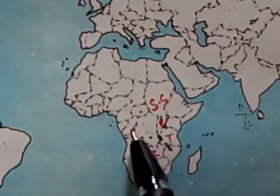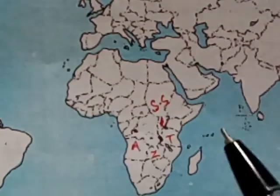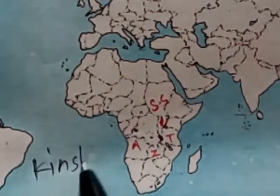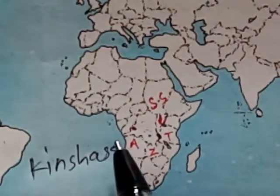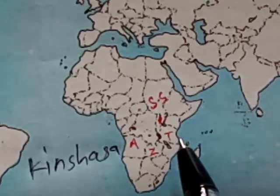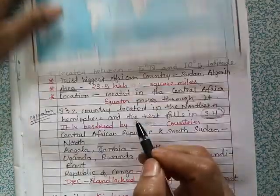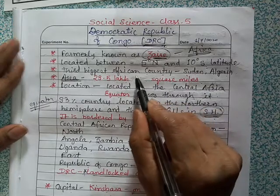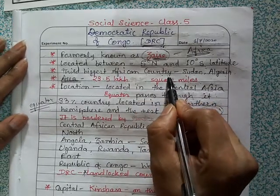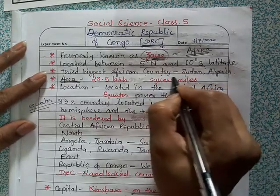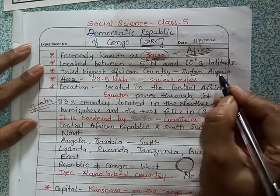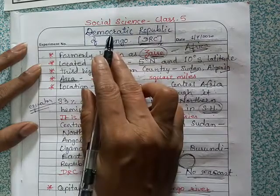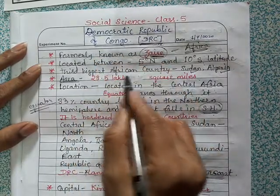Here in the centre is the capital of DRC — it is Kinshasa. DRC is the third biggest African country by area. Sudan is the first biggest, Algeria is the second biggest, and then comes the Democratic Republic of Congo as the third biggest country in Africa.